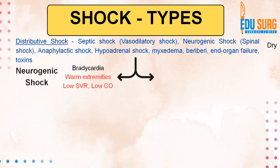In distributive shock, if the extremities are warm, it signifies neurogenic shock. Bradycardia is seen only in neurogenic shock. So remember: bradycardia with warm extremities. Low systemic vascular resistance occurs because the nerves have been affected, so the vessels start dilating — that is why it is known as vasodilatory shock. When the vessels are dilated, the extremities are warm. Bradycardia is a classical marker of neurogenic shock — a very commonly asked and important question.